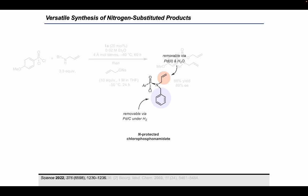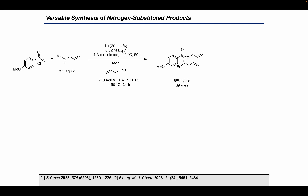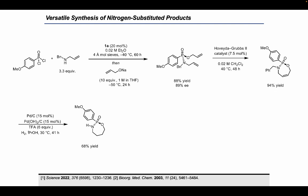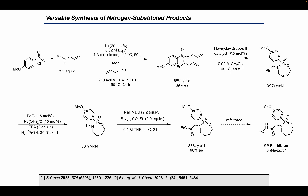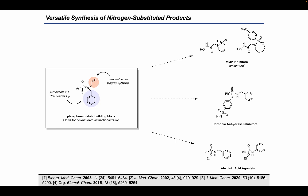As a proof of concept, we applied this method to the synthesis of a matrix metalloproteinase (MMP) inhibitor. Under modified conditions using 20 mol% catalyst, para-methoxyphenyl phosphonic dichloride underwent reaction with N-allylbenzylamine, and after subsequent reaction with allyl alkoxide, the phosphonamidate product was formed in 89% ee and 88% yield. Ring-closing metathesis closed the seven-membered ring in 94% yield. Subjection to palladium on carbon with trifluoroacetic acid under a hydrogen atmosphere resulted in both alkene reduction and hydrogenolysis of the benzyl group, affording the deprotected phosphonamidate. The nitrogen was then deprotonated by NaHMDS and reacted with alpha-bromoethyl acetate to afford a glycine ester-derived product, a known direct precursor to the MMP inhibitor, concluding the formal synthesis. Other applications of these intermediates could include synthesis of carbonic anhydrase inhibitors and nipecotic acid agonists.